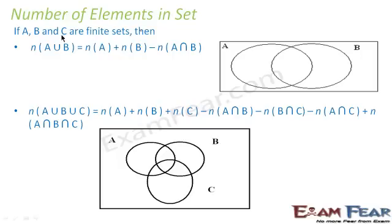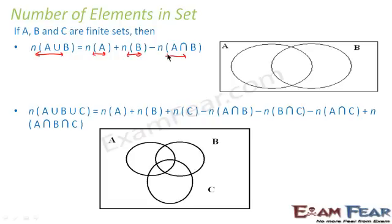The number of elements in a set is nothing but the number of unique elements in a set. The formula is: the number of elements in A union B is equal to the number of elements in A, plus the number of elements in B, minus the number of elements in A intersection B.